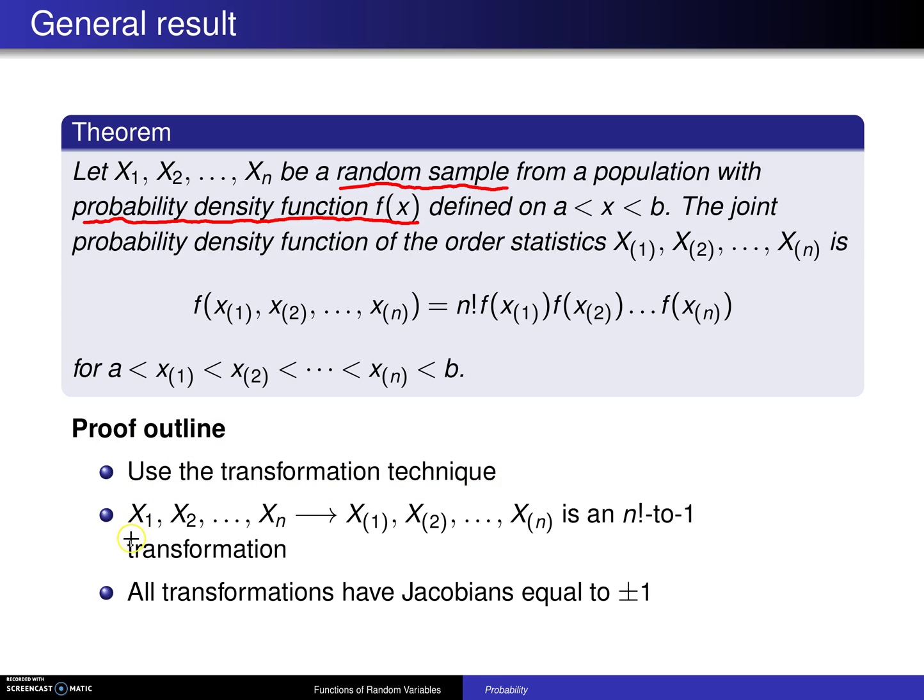And within that, it turns out that the orderings from the raw data to the order statistics is an n factorial to 1 transformation. And all of those transformations have Jacobians that are equal to plus or minus 1. And that will establish this result, which will be illustrated on the next slide.